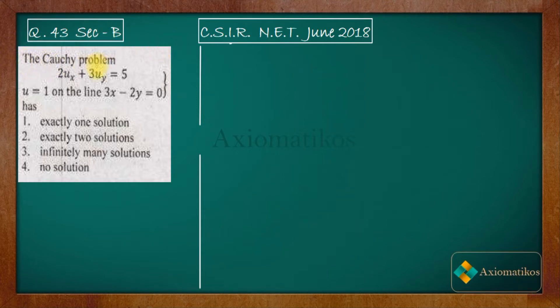The Cauchy problem: we are given a Cauchy problem and the condition is u = 1 on the line 3x - 2y = 0 has exactly one solution, two solutions, infinitely many solutions, and no solution. So it's a very important problem or also a very easy problem. If you remember a note for this problem you can solve this problem easily. So I will write a note for you that you can note down and you have to remember it while you are going to your exam.